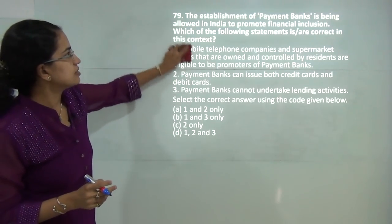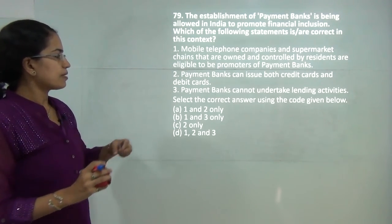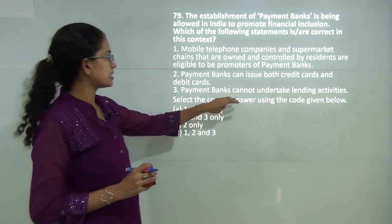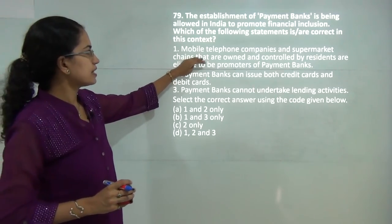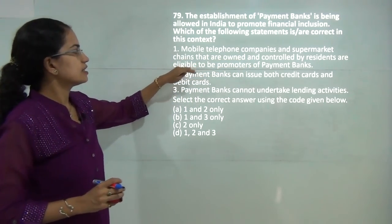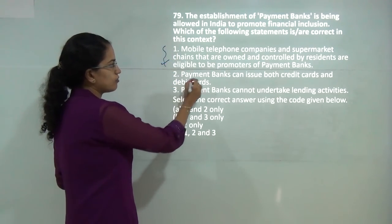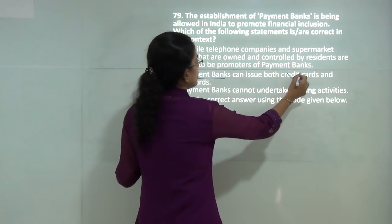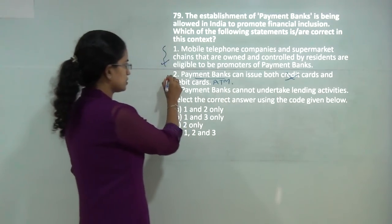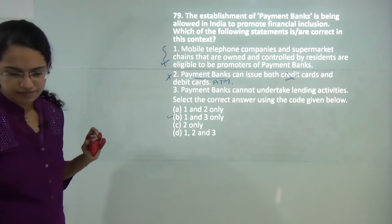The next question asks which of the following can explain payment banks. Payment banks cannot undertake lending activities — that is correct. They are mainly used by mobile companies and supermarkets that are eligible to be promoters of payment banks. However, payment banks can issue debit cards and ATM cards, not credit cards, so statement 2 is incorrect. So 1 and 3 would be the correct answer.